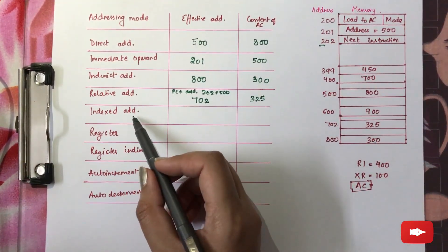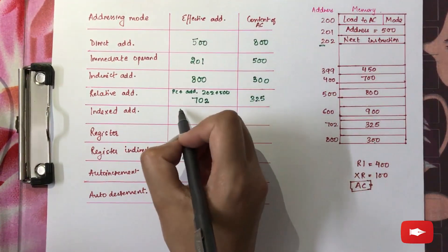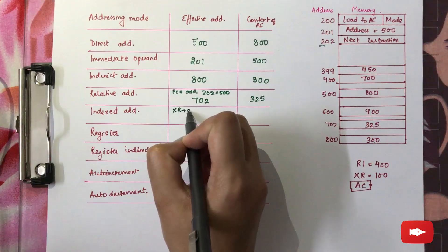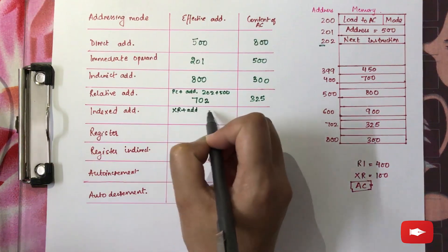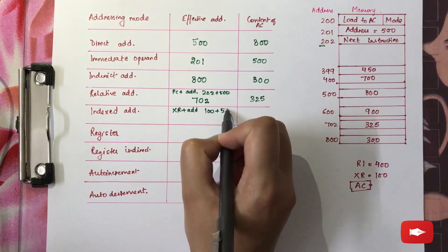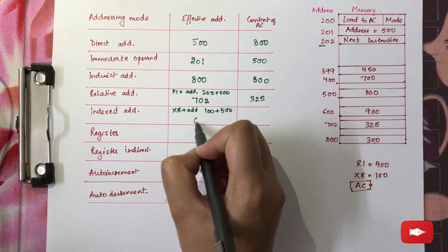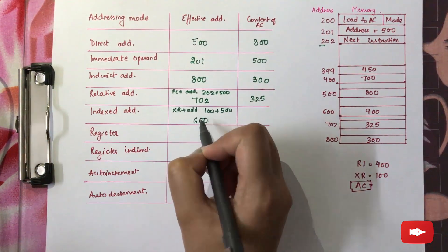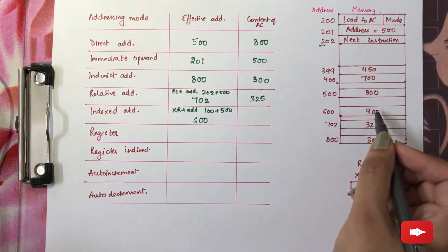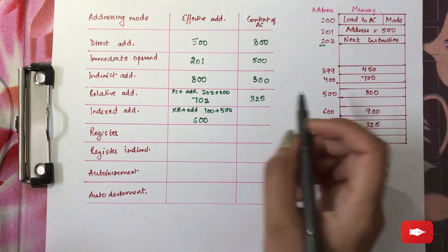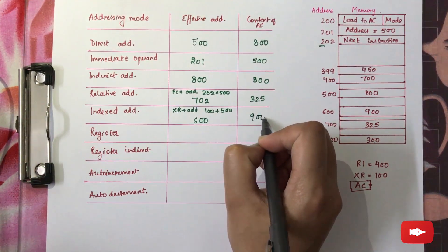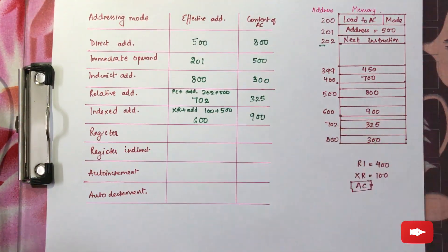Next is the indexed addressing mode, where XR is added to the address — that is 100 plus 500 — which gives you 600 as the effective address. And the value at 600 is 900, which will give you the value of the operand.